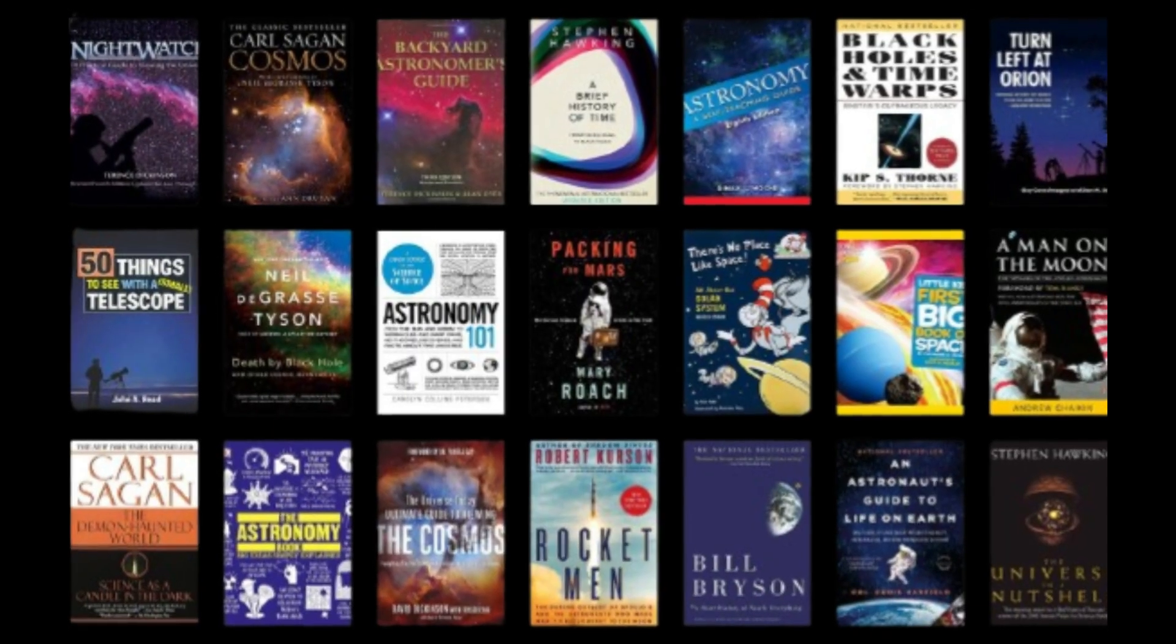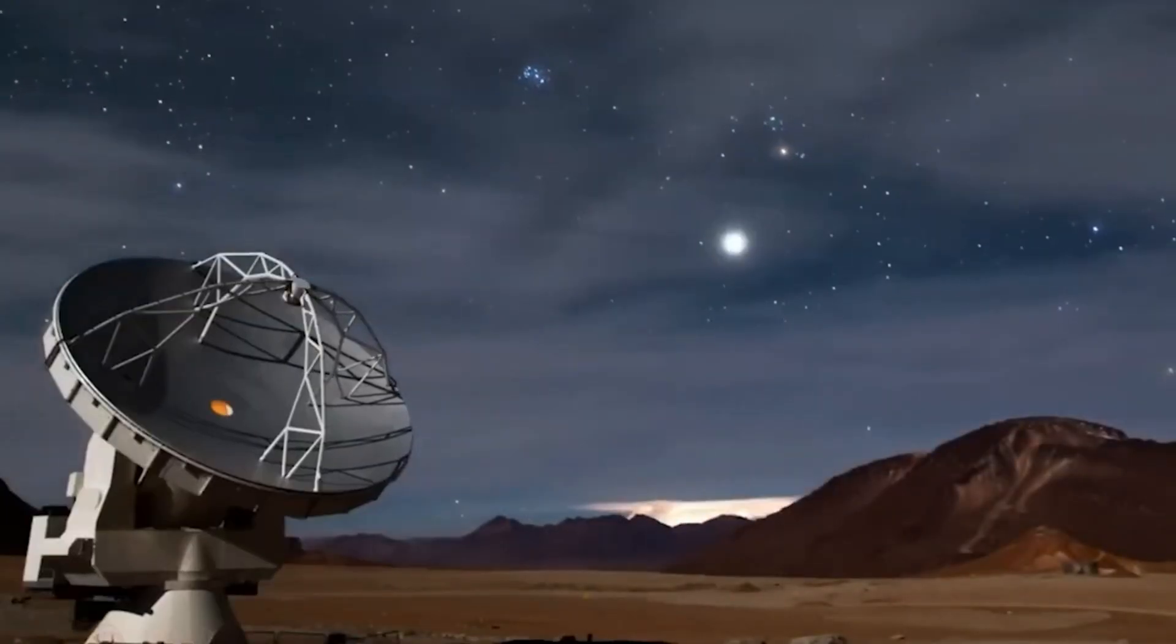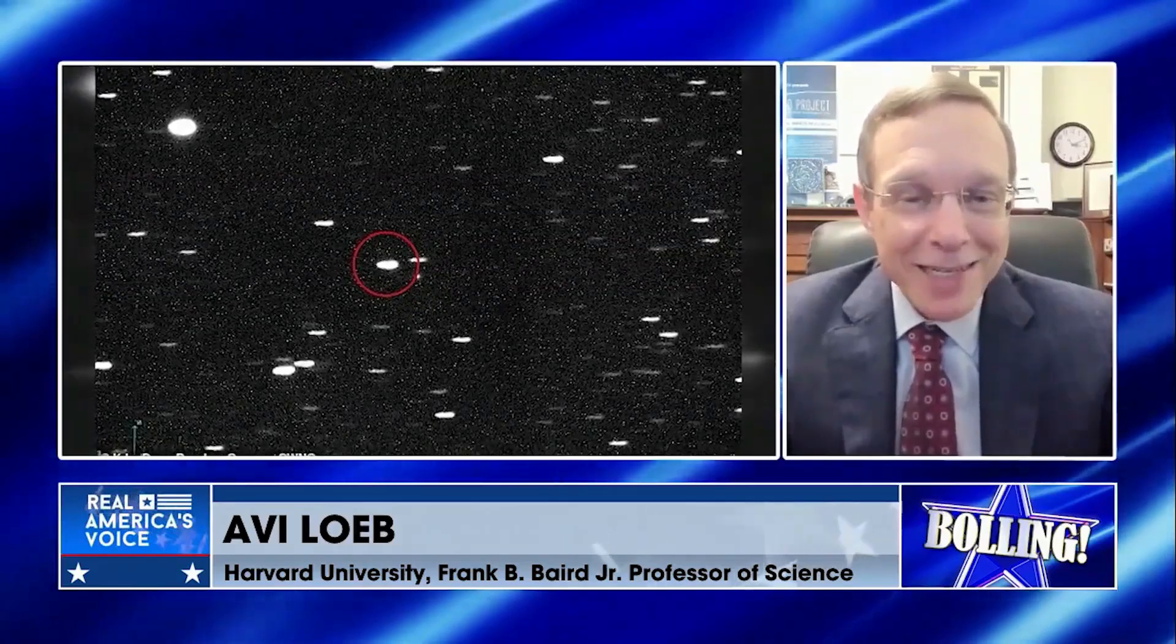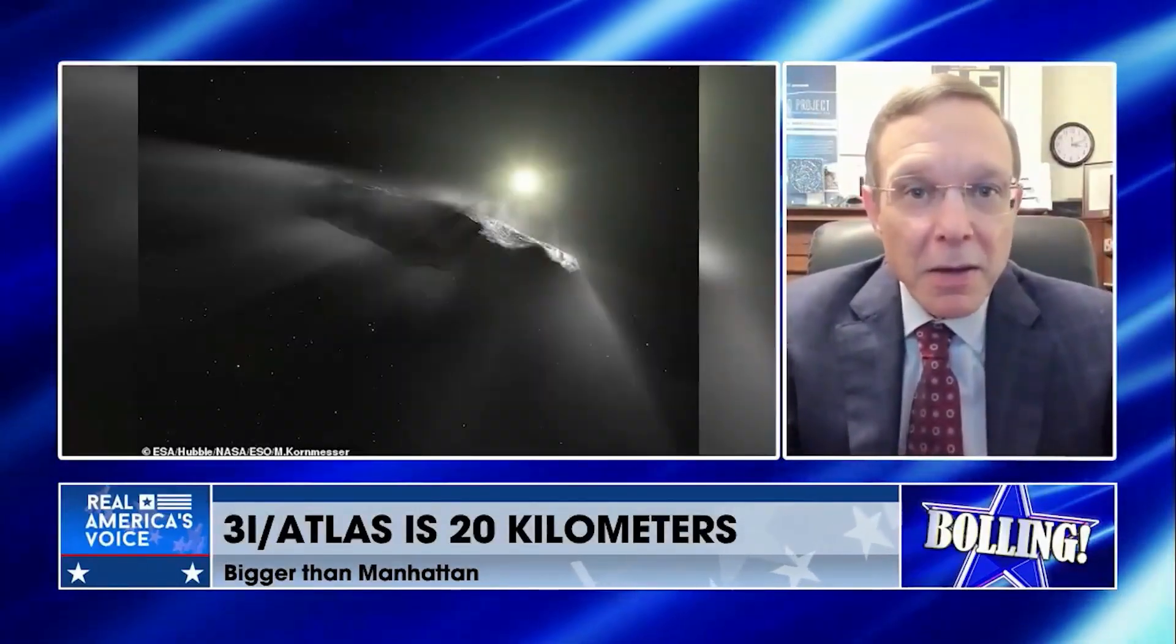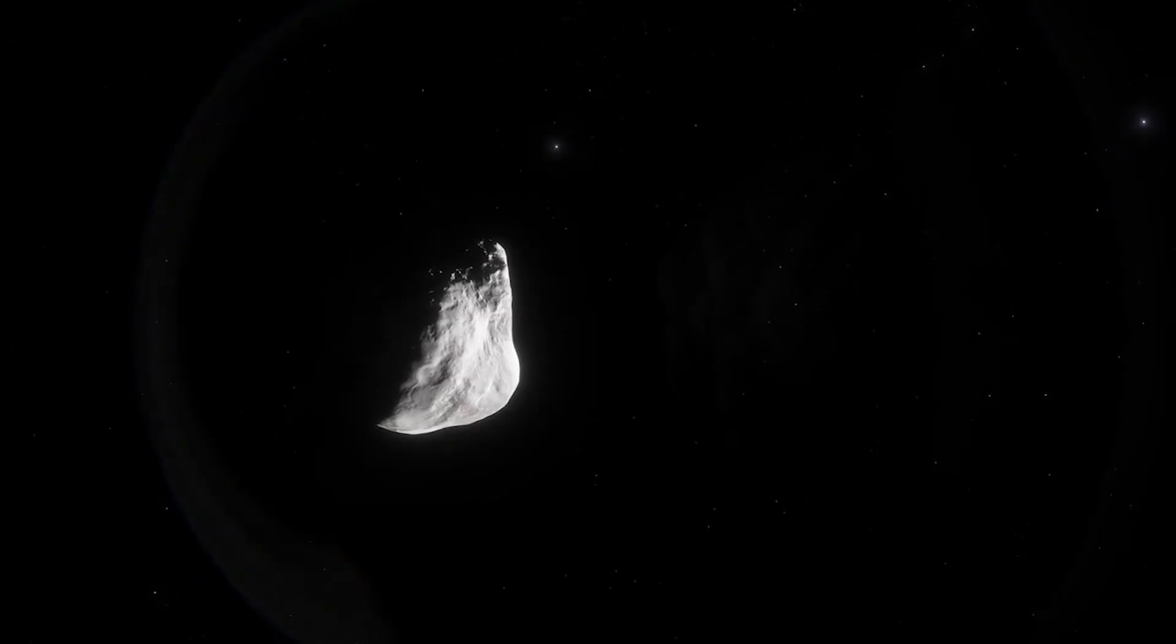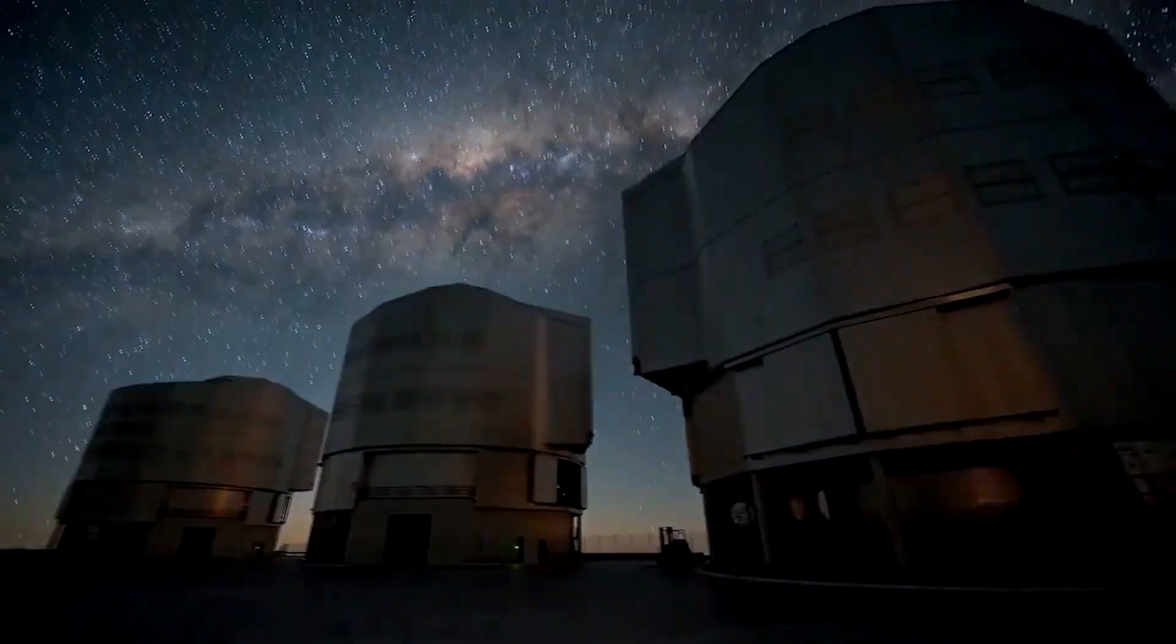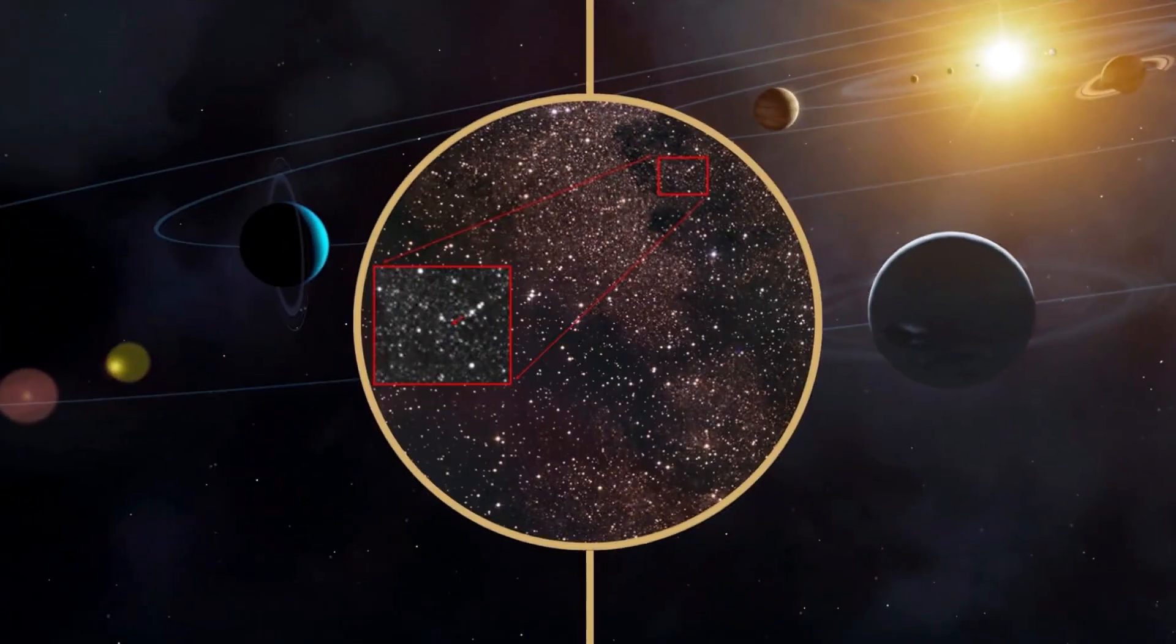Moreover, astronomers haven't yet detected the volatile gases like cyanogen or diatomic carbon that typically appear when comets get closer to the sun. But 3i Atlas was still about 4 astronomical units from the sun during most observations. That's roughly 372 million miles out, about Jupiter's distance. Most comets don't start showing strong gas emissions until they get much closer, and solar heating really intensifies.